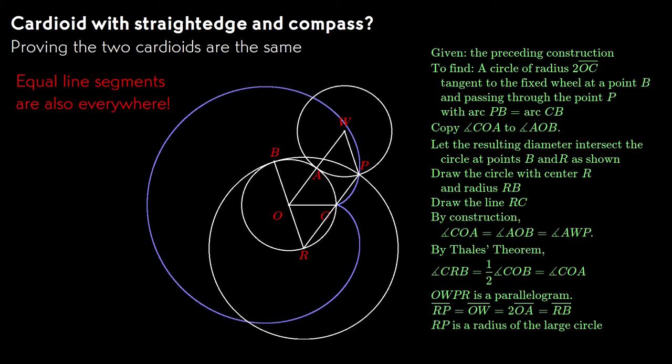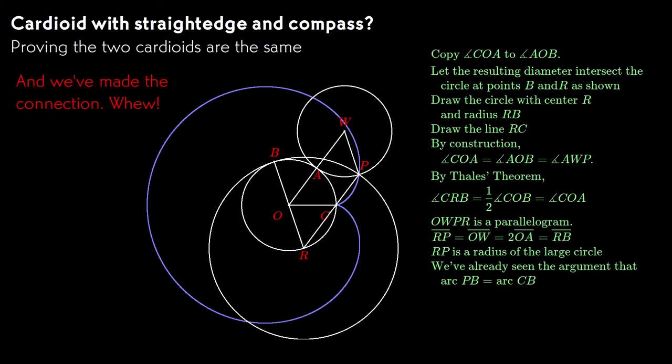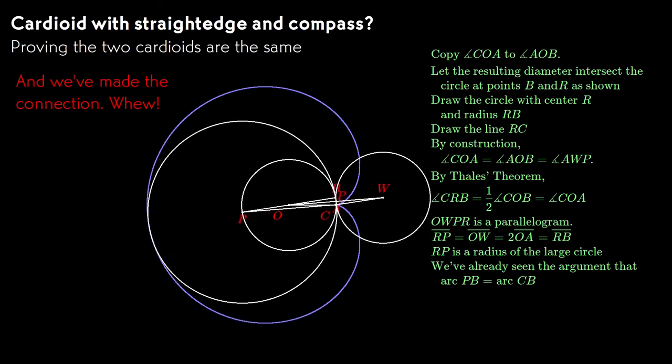RP, OW, and RB are all equal to the diameter of the fixed wheel, and OA is equal to its radius. The arc length formula shows that the arcs CP and PB are of equal length, and we're pretty much done. We can prove the converse that every point on the cardioid defined by the ring as a point on the one defined by the wheel, by essentially running the same steps in reverse.